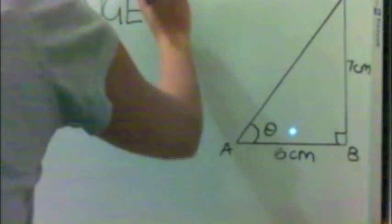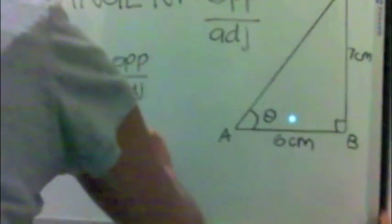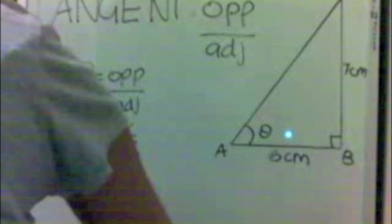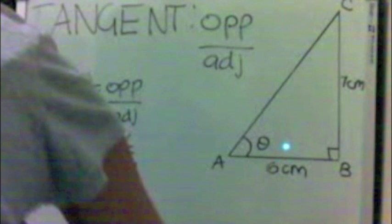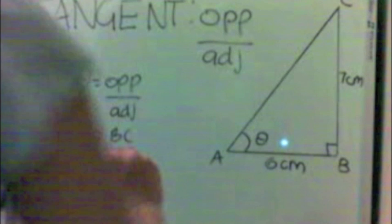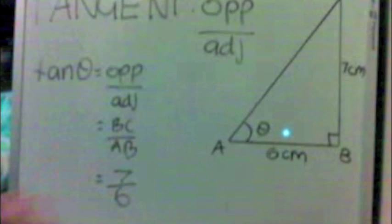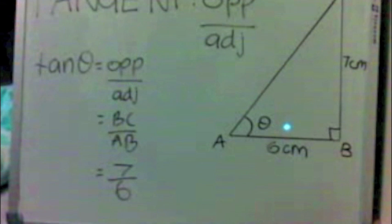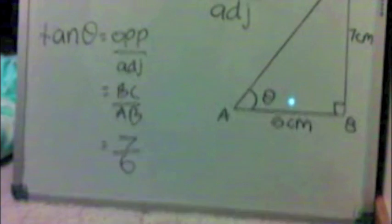Lastly, we look at the tangent ratio. If the hypotenuse is not provided, there will be two other sides: the adjacent side and the opposite side to the unknown angle. In this example, we have the unknown angle theta, with AB at 6cm and BC at 5cm. Since there is no hypotenuse, and both other sides are provided, we know that the tangent ratio is needed to find the unknown angle theta.